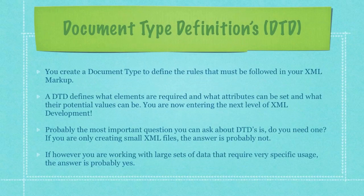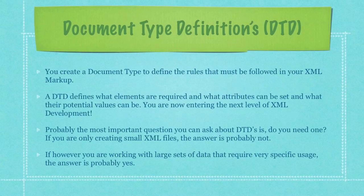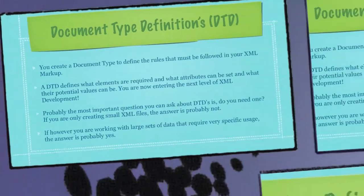Now I'll briefly go through what a document type definition is. You create a document type to define the rules that must be followed in your XML markup. A DTD defines what elements are required, what attributes can be set, and what their potential values can be. You are now entering the next level of XML development. The most important question you can ask about DTDs is: do you need one? If you are only creating small XML files, the answer is probably not. However, if you are working with large sets of data that require very specific usage, the answer is probably yes.